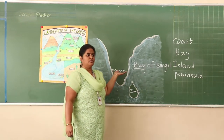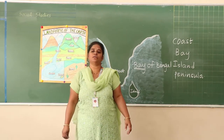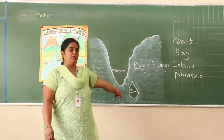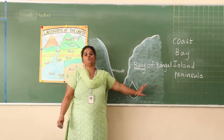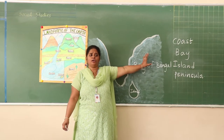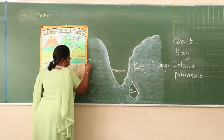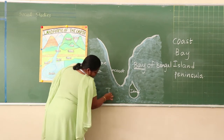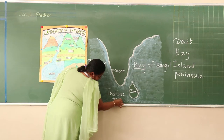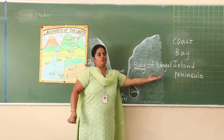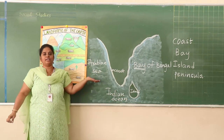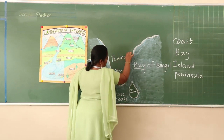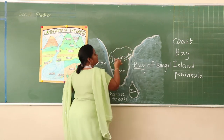Children, do you know India is a peninsula country? Why is it called a peninsula country? We are going to learn about a peninsula. The southern part of India is surrounded with oceans on three sides — the Arabian Sea, the Indian Ocean, and the Bay of Bengal. The landmass which is surrounded with three sides of water is called a peninsula. That is why India is called a peninsula country.